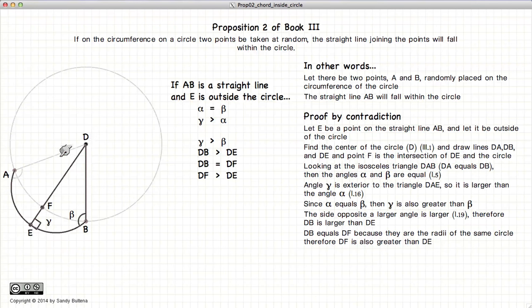DF should be bigger than DE. That doesn't make any sense. We have DB is greater than DE, DB equals DF, so therefore DF is greater than DE. That makes no sense. And since it makes no sense or is a contradiction, we therefore have shown that E cannot be outside of the circle.